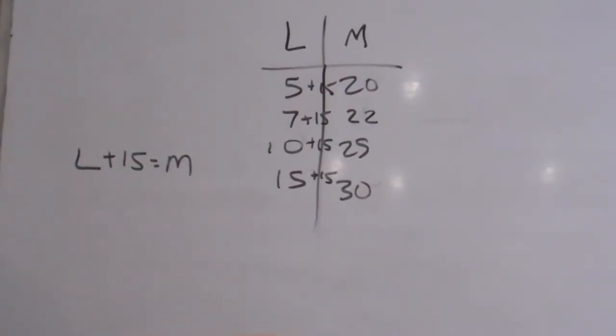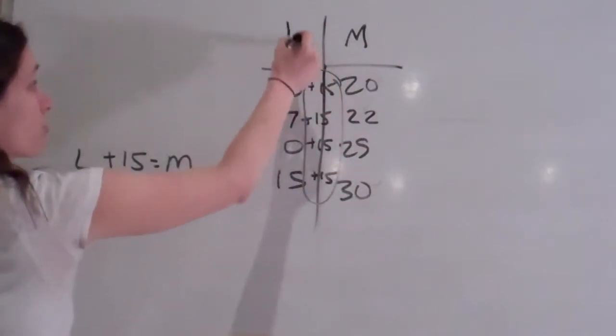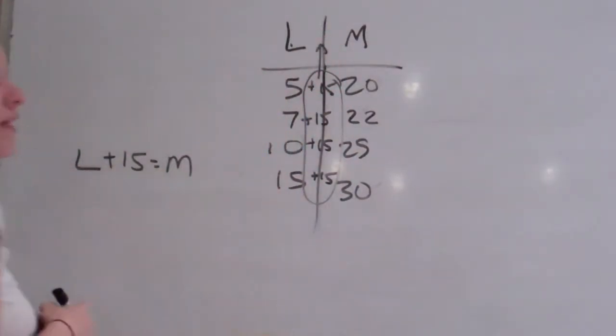So what we do is L plus 15 equals M. Everybody see how we got that function? So whatever is in the middle, you just put L and then put that function right there. And what did L and M stand for? This time it didn't actually have anything that was supposed to.